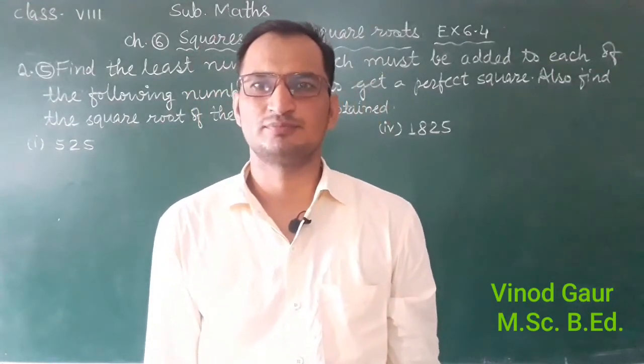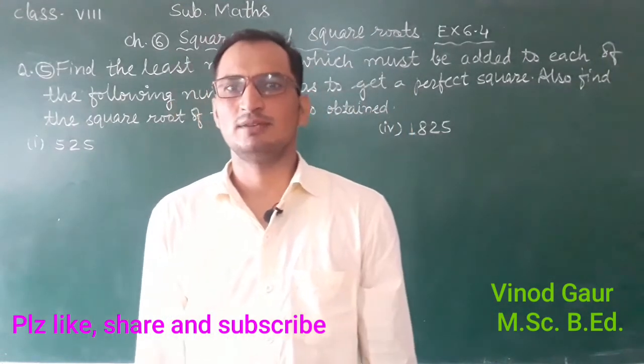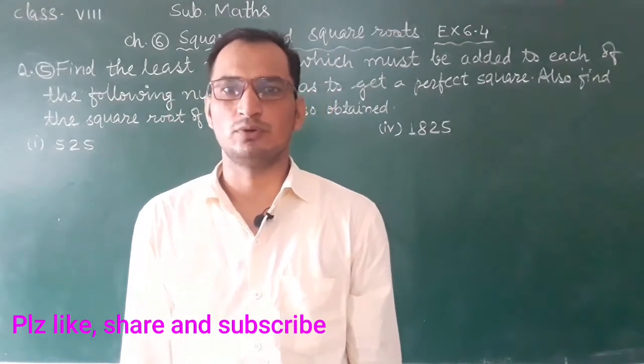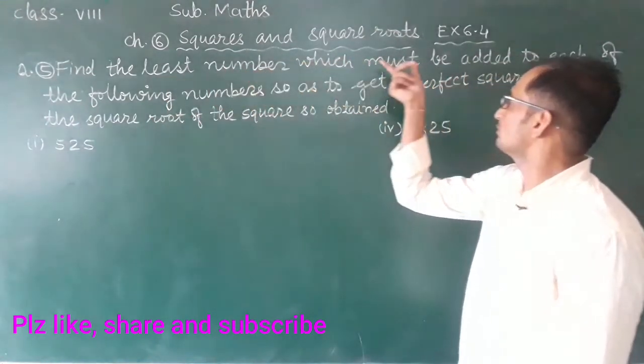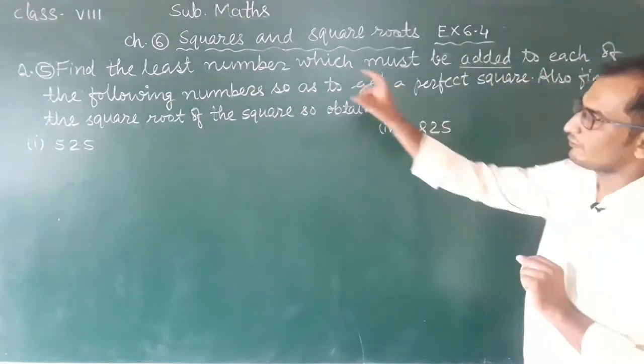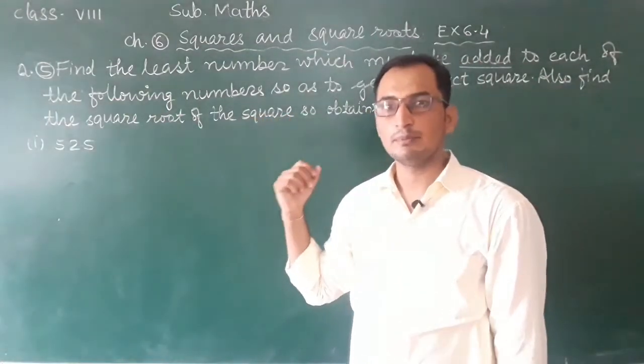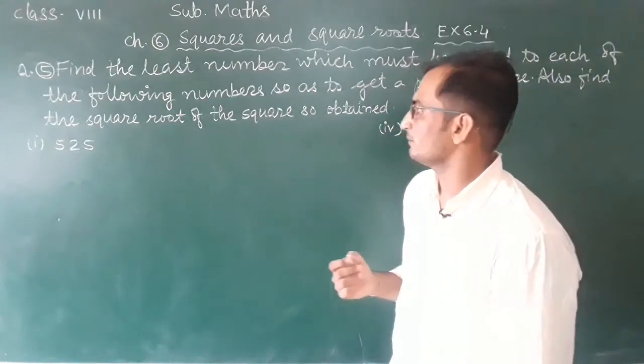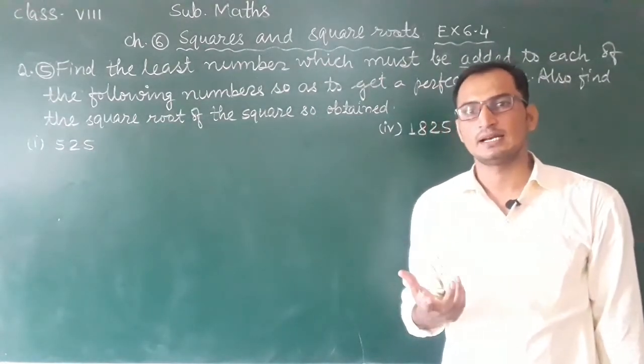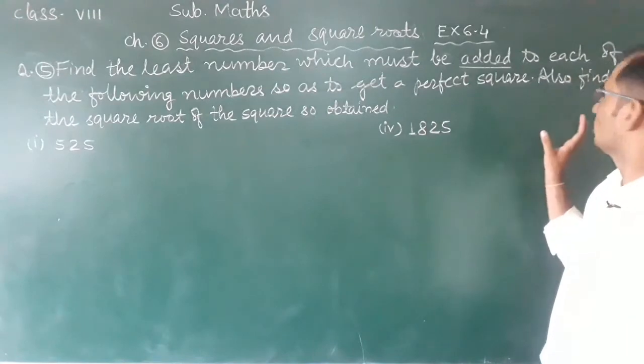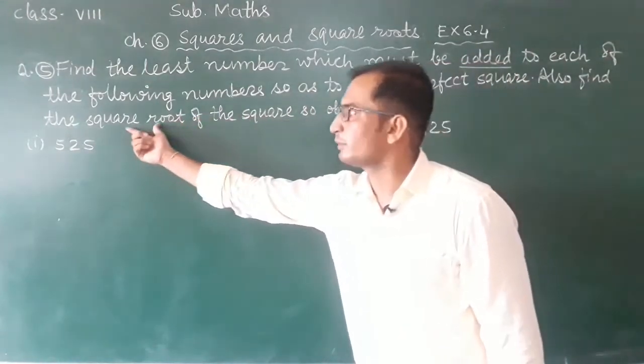Good morning students. Today we are going to discuss chapter 6: Squares and Square Roots. We will discuss Exercise 6.4, Question Number 5. The question asks: Find the least number which must be added to each of the following numbers to get a perfect square. Also find the square root of the square which you get.